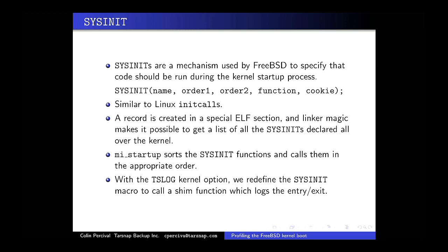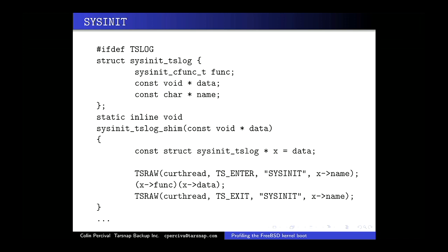When you run with the TS log kernel option enabled, sysinit is just a macro which does all the work of creating these structures — so I simply redefined the sysinit macro. Instead of calling the function you specified, it calls a shim function. The shim logs 'we are about to enter this function,' then calls the function, then logs 'we just exited.' I use a TS_RAW macro that lets me log 'sysinit' plus the function name as two strings, making it easy to distinguish sysinits from other logged events when things are dumped out at the end.